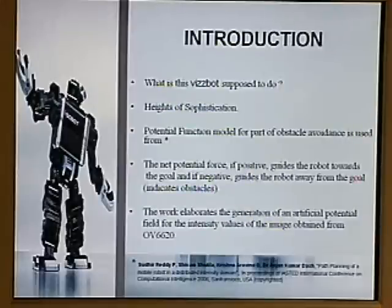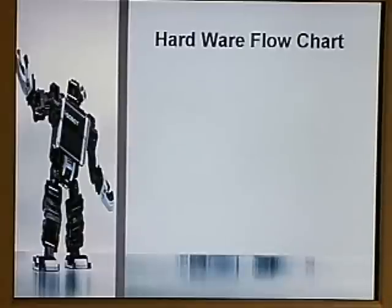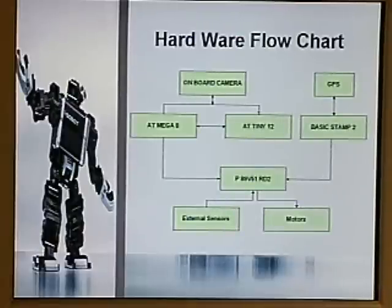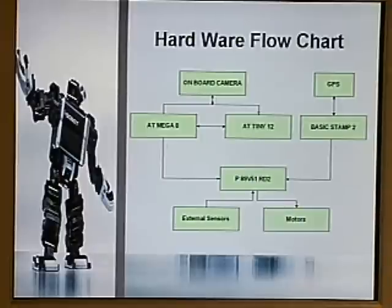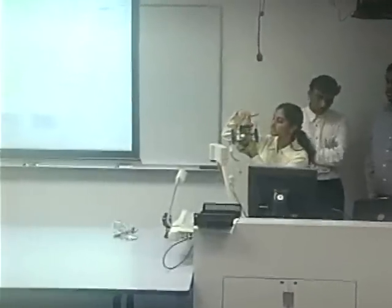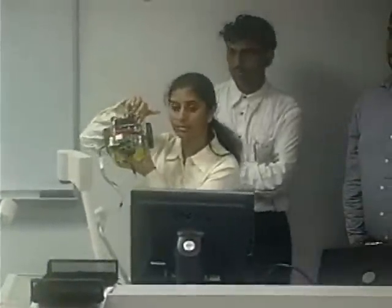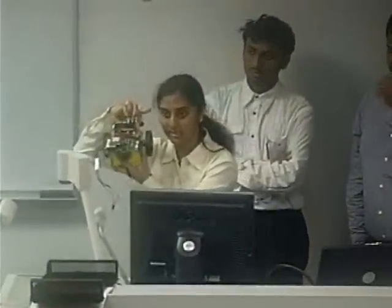Here the work elaborates the use of artificial potential field with an OV6600 camera vision sensor. As you can see, this is the hardware profile. This is the onboard camera. There are two microcontrollers connected to the onboard camera — they are inside. There is a GPS in the microcontroller. This is called the brain of the microcontroller, the actual one which does the processing.